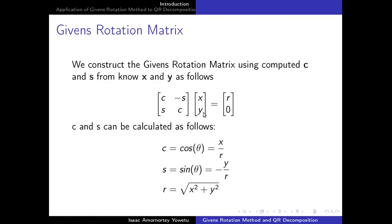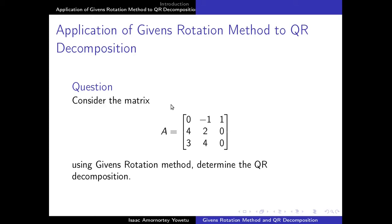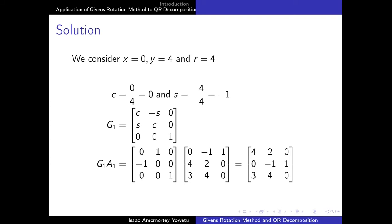When you apply the Givens rotation matrix to our vector, you will get the length R, and beneath it we will get zero. Let's see how it actually works in practice. Given this matrix A, once you apply the Givens rotation matrix to decompose it into Q and R, in the first step we have to identify our X and our Y.